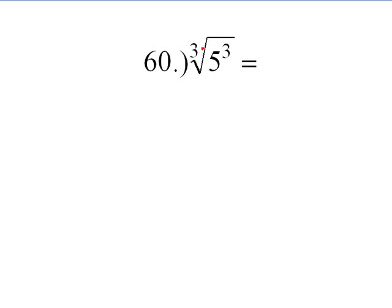Here is the third root of 5 raised to the third. And remember that rule that we said if we had a third root and an exponent of equal value, it would simply equal the number under the radical. So the answer to this is 5.